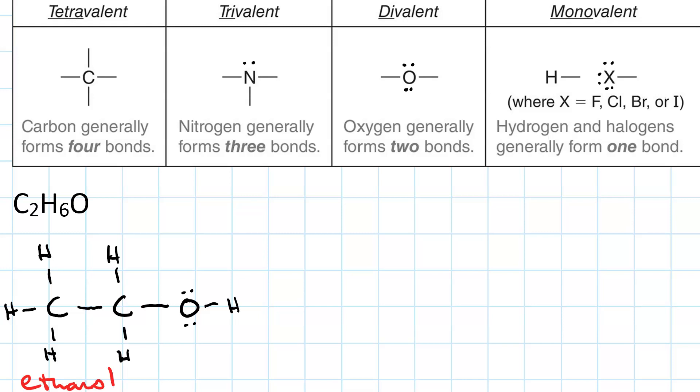We could also set up our backbone to be C-O-C. The oxygen already has two bonds. Now we fill in the hydrogens until each carbon has four bonds, giving us the correct chemical formula. This molecule is called dimethyl ether.